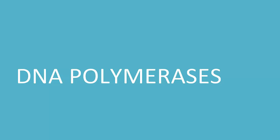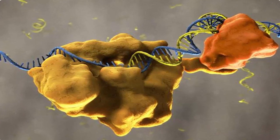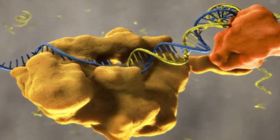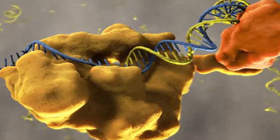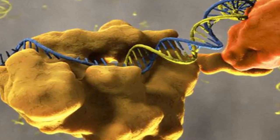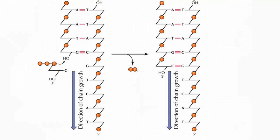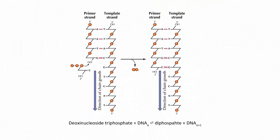DNA polymerases are enzymes that synthesize DNA molecules from deoxyribonucleotides. They catalyze the following reaction: they add a nucleotide and a pyrophosphate is released. They can only synthesize DNA in the 5' to 3' direction.